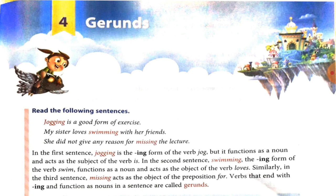In the second sentence, swimming — the -ing form of the verb swim — functions as a noun and acts as the object of the verb love. Similarly, in the third sentence, missing acts as the object of the preposition for.